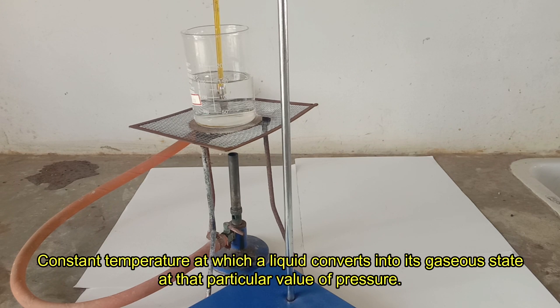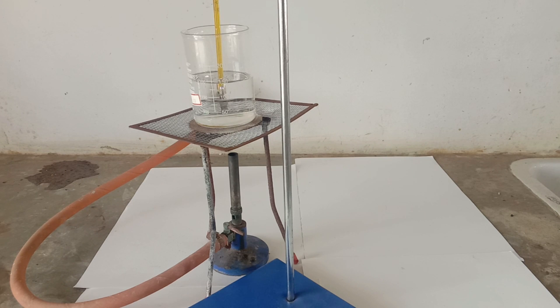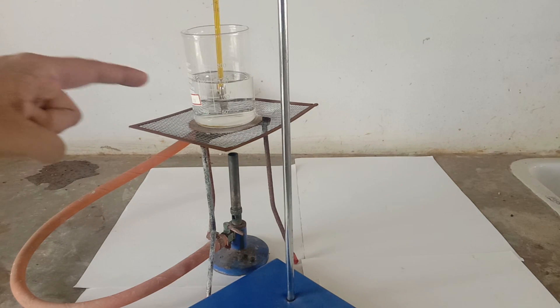Here is the true definition of boiling point: it is a constant temperature at which liquid converts into gaseous state at that particular value of pressure. You should understand that boiling point is not a constant quantity. Inside a pressure cooker, the pressure is much larger than atmospheric pressure, so water boils at around 125 degrees Celsius. If you go to Mount Everest, the atmospheric pressure is very low compared to sea level, so water boils below 100 degrees Celsius, at about 70 degrees Celsius.